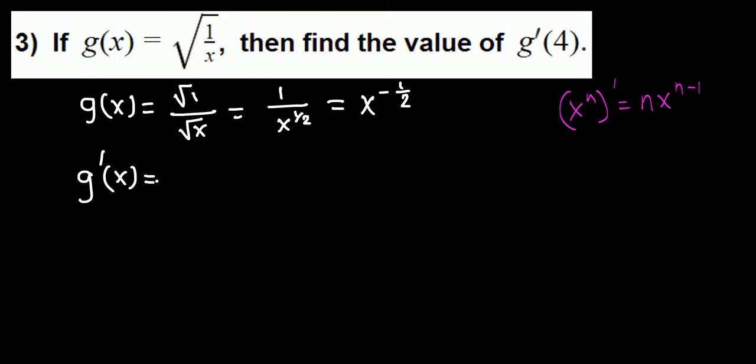So g'(x) is n·x^(n-1): negative 1/2 times x raised to negative 1/2 minus 1, which is negative 3/2. We don't like negative exponents, so put this term on the bottom: negative 1 over 2x raised to 3/2. That's the derivative of this function.